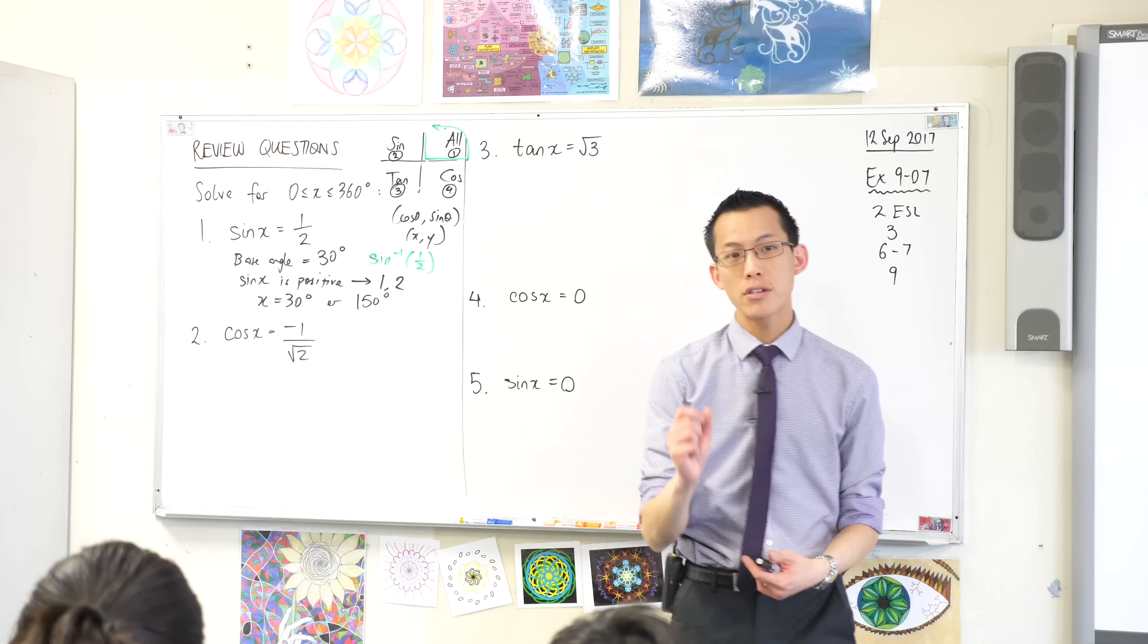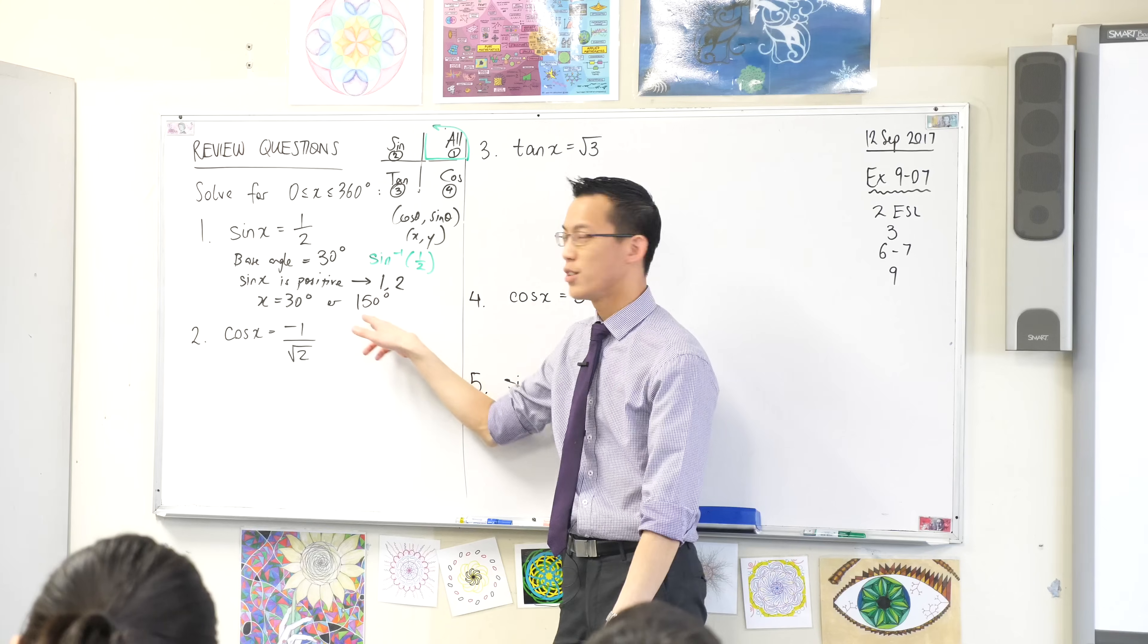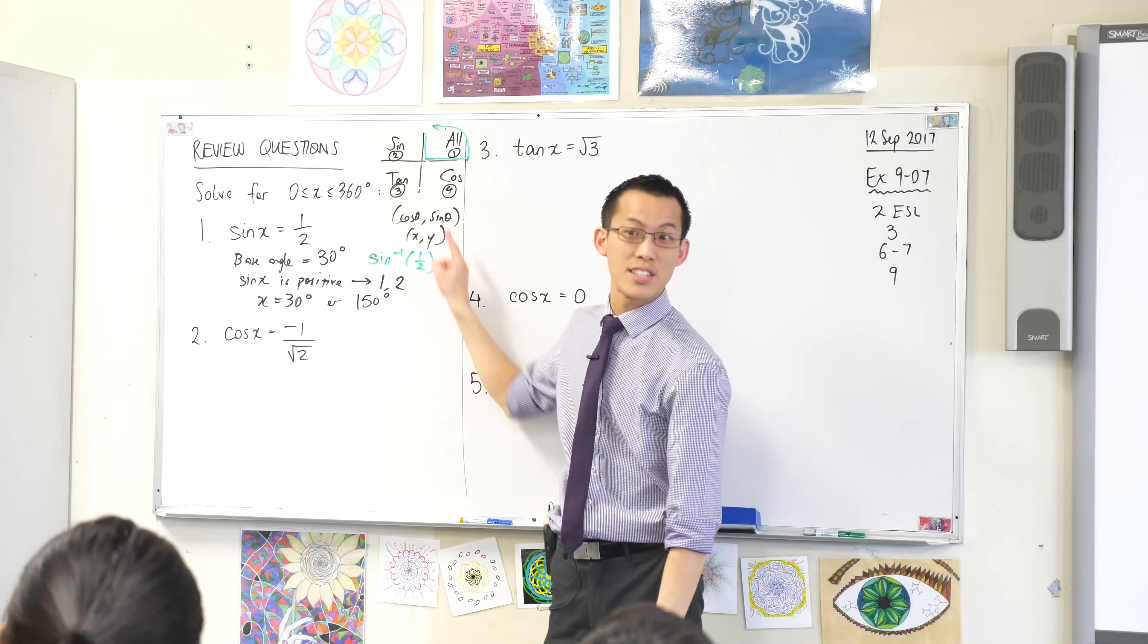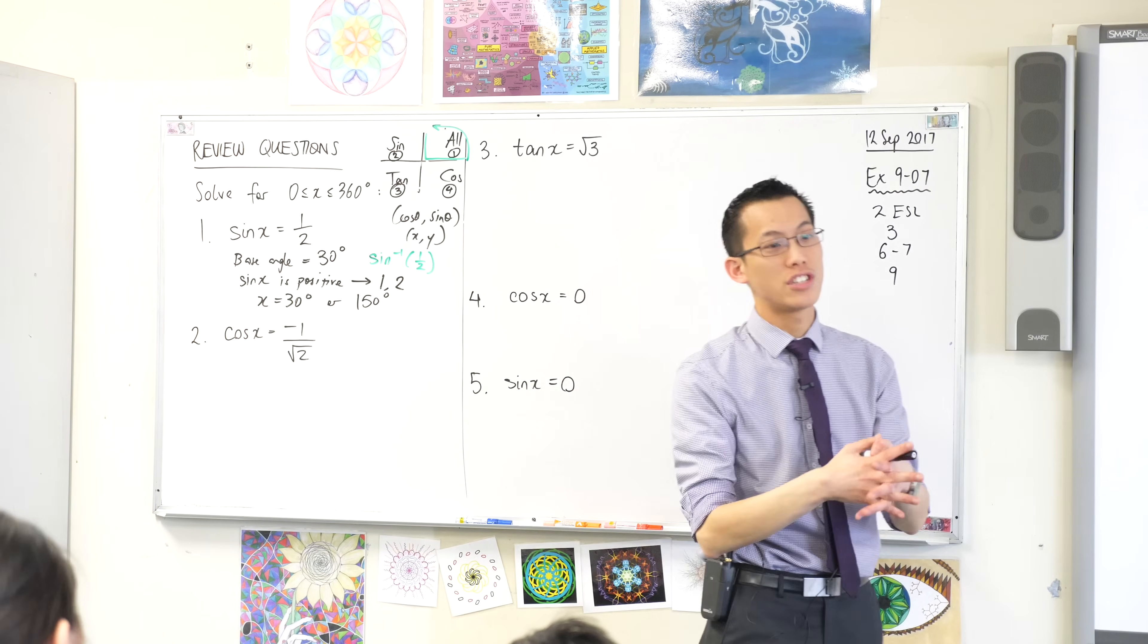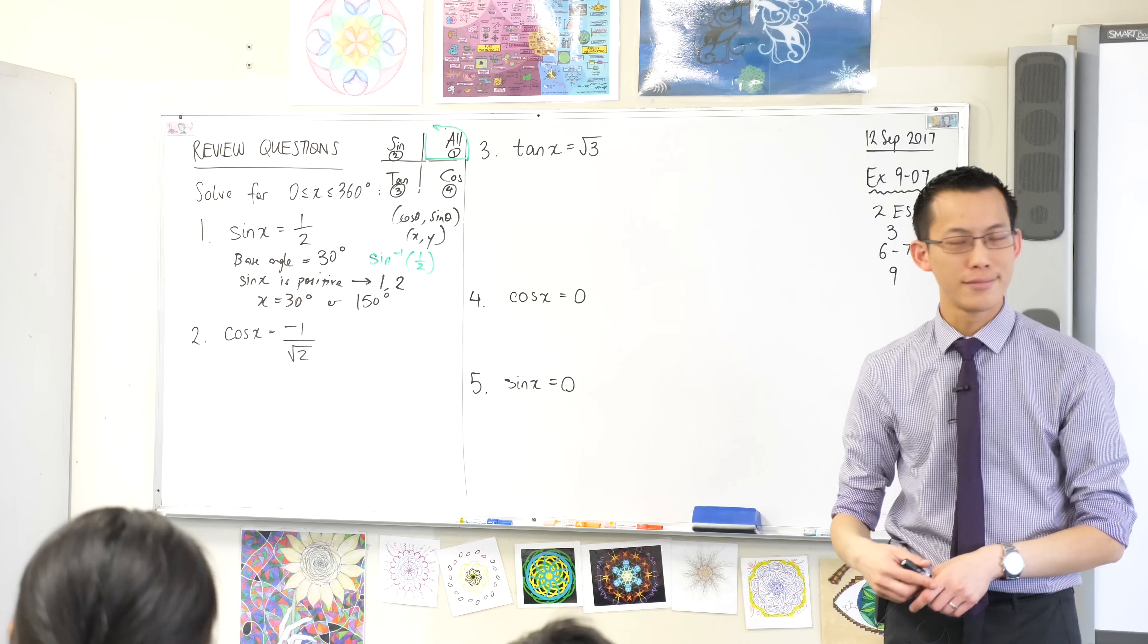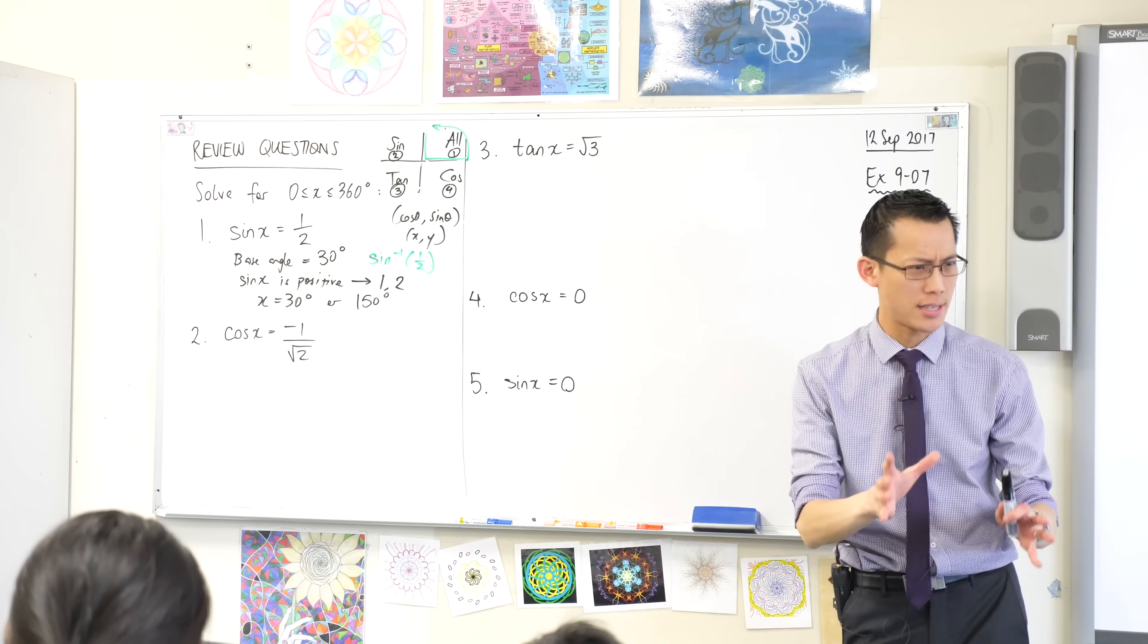And that's it. Those are the answers. You can check if you got it right, just like every other equation you've ever done, by taking these solutions and substituting back. Go ahead, punch in sine 30 and your calculator should tell you 0.5. Try sine 150 and it also will give you 0.5. Does that make sense?